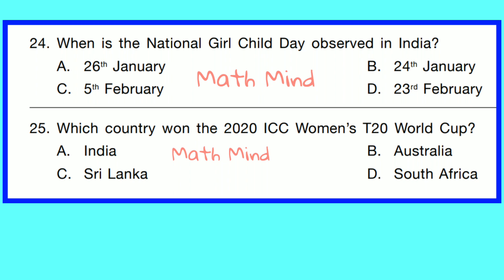Question No. 24. When is the National Girl Child Day observed in India? Option B is correct — 24th January. Question No. 25. Which country won the 2020 ICC Women's T20 World Cup? Option B is correct — Australia.